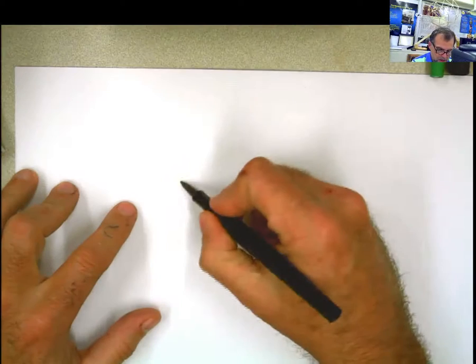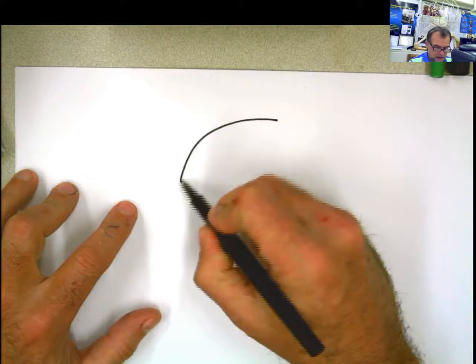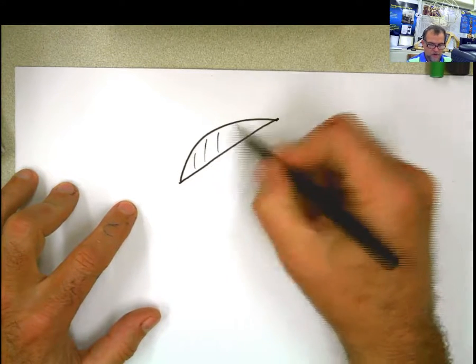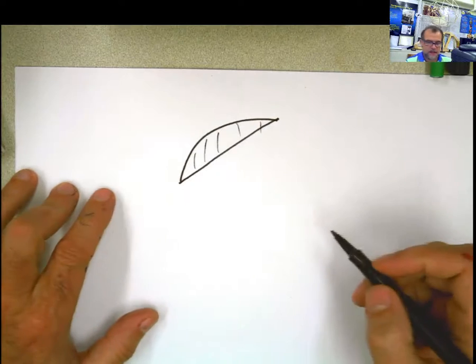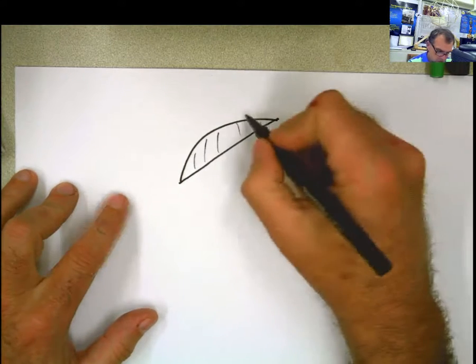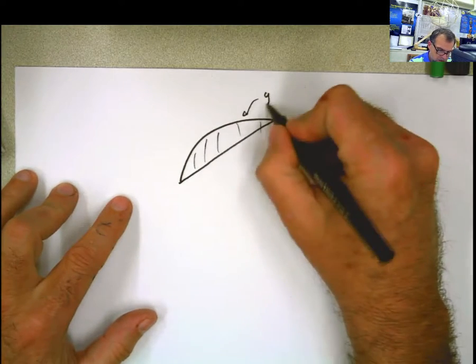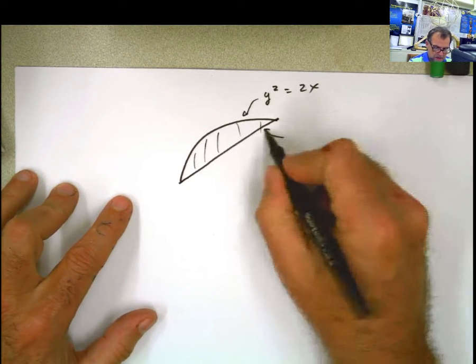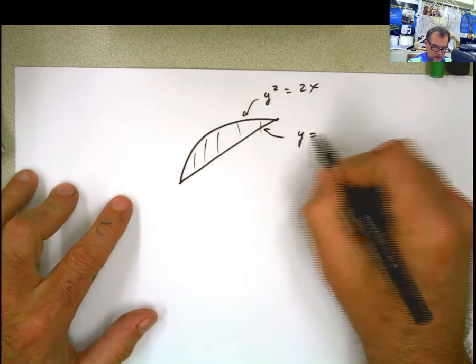Basically what I'm telling you is that we're going to get a parabola like that, intersected by a straight line like that. And we have to calculate the moment of inertia of the area generated by those two curves. The first curve is y squared equals 2x, and the second curve is y equals x.